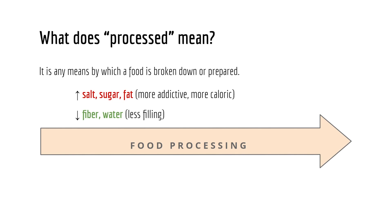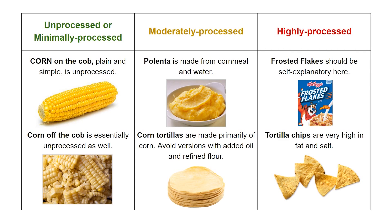What does processed really mean? It is any means by which a food is broken down or prepared. Typically, we add salt, sugar, and fat — making the food more addictive, more caloric, more delicious — while at the same time reducing fiber and water, making the food less filling and thus easier to overeat. Plain old corn is an unprocessed, whole plant-based food. Highly processed versions — Frosted Flakes, potato chips — are the foods we want to avoid.